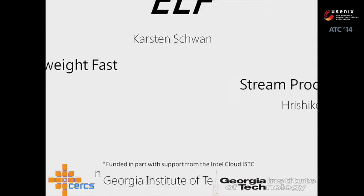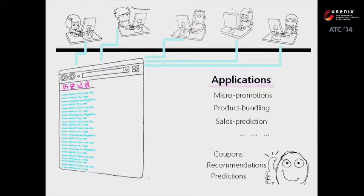We will start from the motivation. Many stream processing applications tend to run concurrently on the same platforms. Here is an example: when you are buying things at an e-commerce company like Amazon, your user activities like buys, clicks, and likes are going to be logged by the company. On the back end, there are some applications concurrently running on these logs to generate business-critical decisions.